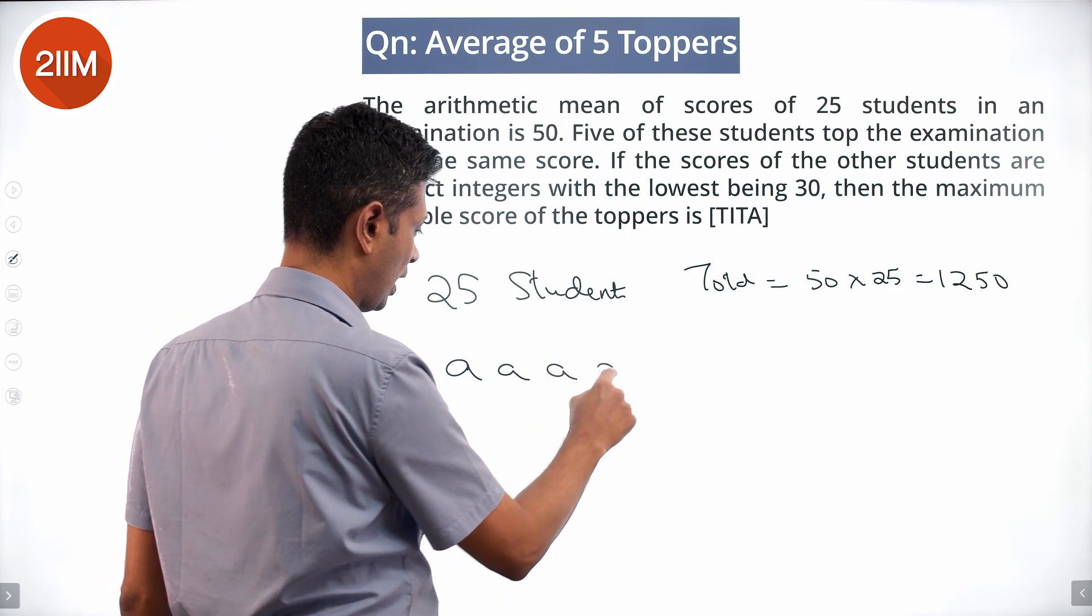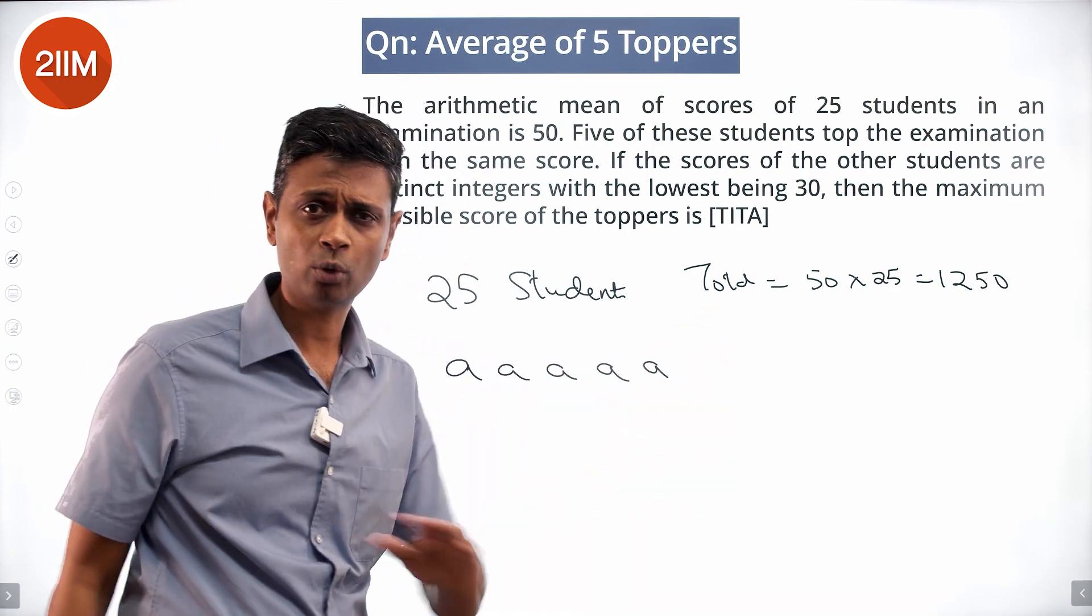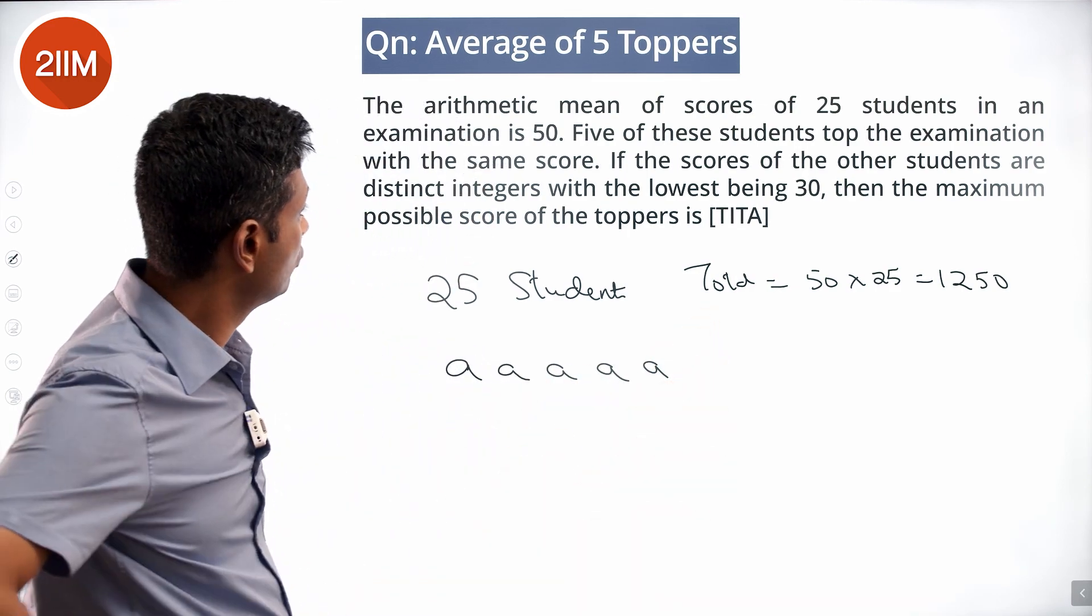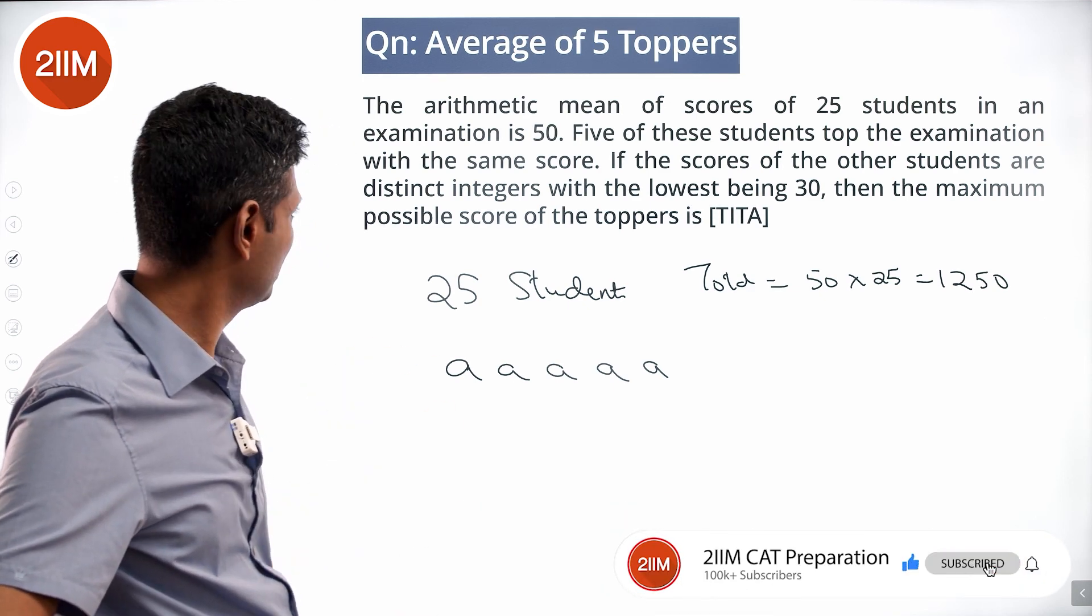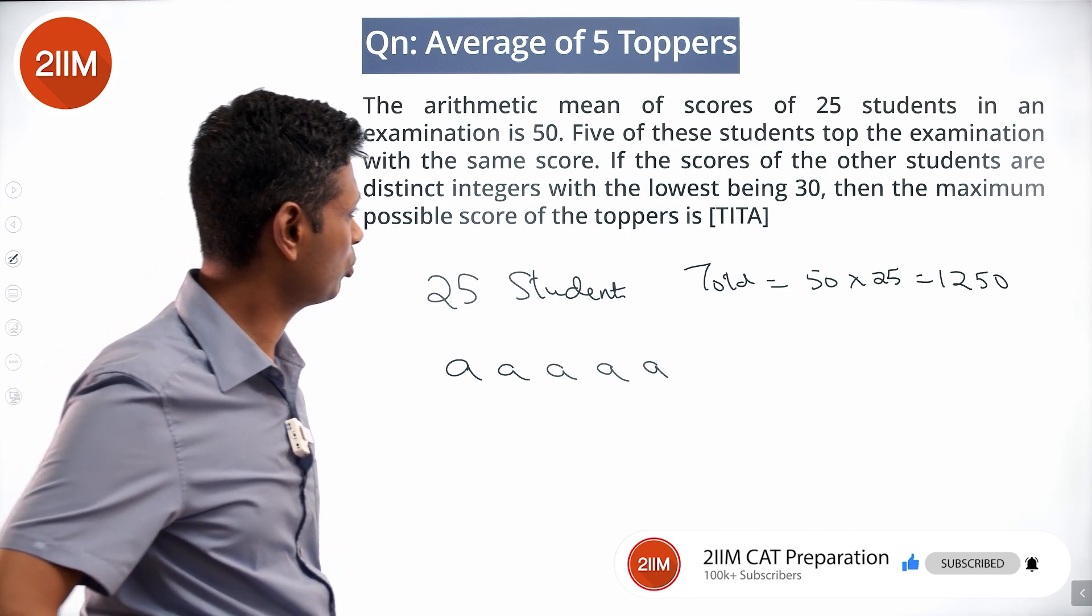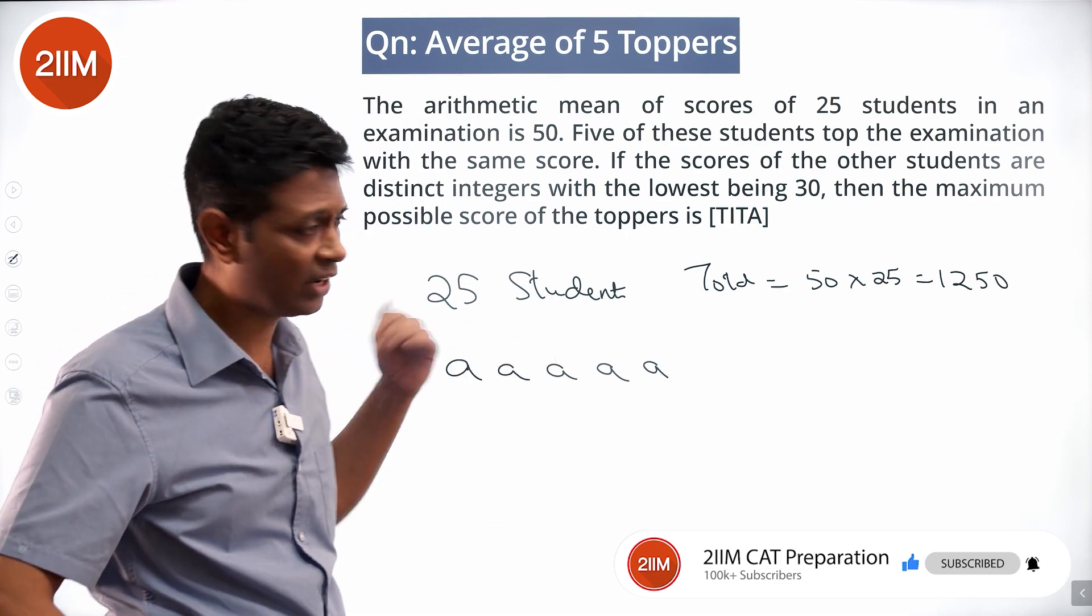We have a, a, a, a, a - five toppers all equal. The scores of the other students are distinct integers with the lowest being 30. The maximum possible score of the toppers is what we want to find. Maximum of a.